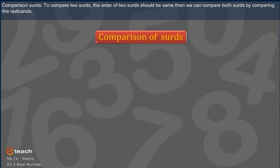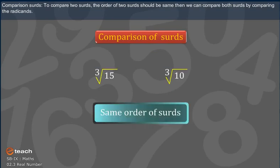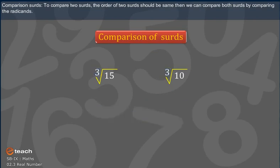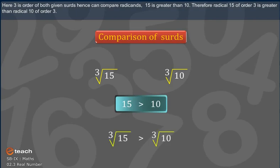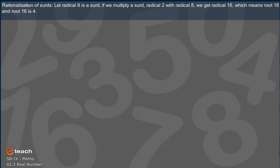Comparison of Surds: to compare two surds, the order of both surds should be the same. Then we can compare both surds by comparing their radicands. Here, 3 is the order of both given surds. Hence, we can compare the radicands. Since 15 is greater than 10, therefore the cube root of 15 is greater than the cube root of 10.